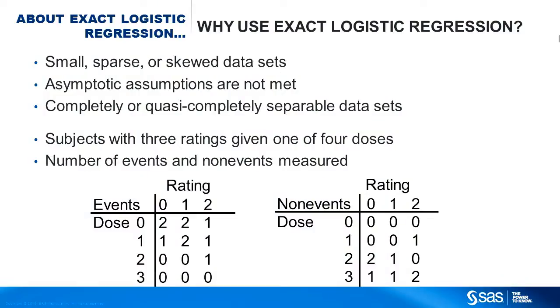You can use exact logistic regression when you have small datasets for which the usual asymptotic assumptions don't hold, and sometimes for separable datasets. For example, this dataset has 18 subjects with three ratings and one of four drug dosages. The data has 12 cells, the events are shown in the left table, and the non-events in the right.